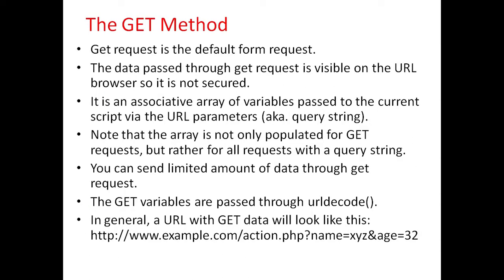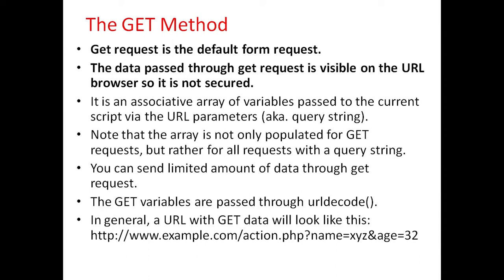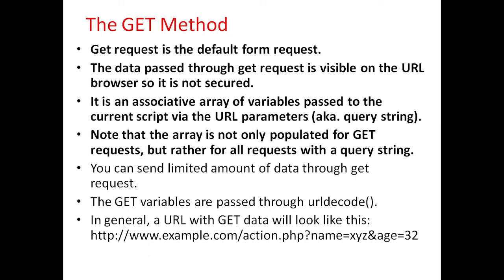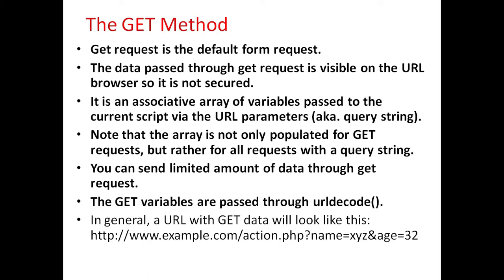First we will see GET method. GET request is a default form request. The data passed through the GET request is visible on the URL browser, so it is not secured. It is an associative array of variables passed to the current script via URL parameters. Note that the array is not only populated for GET requests but rather for all requests with a query string. You can send a limited amount of data through a GET request. GET variables are passed through the URL decode function.